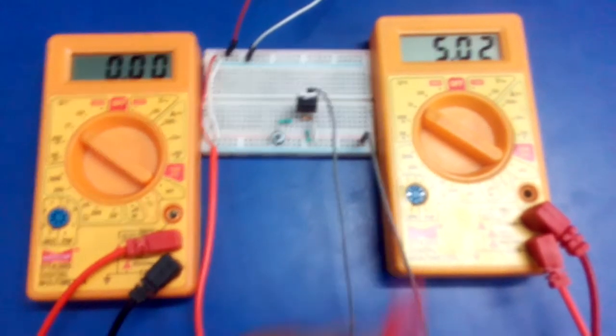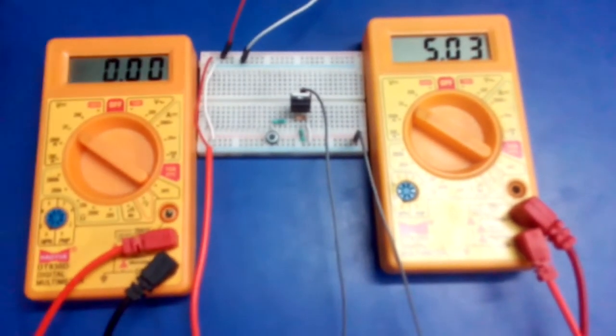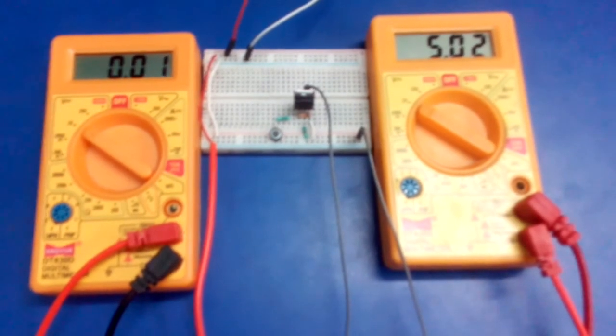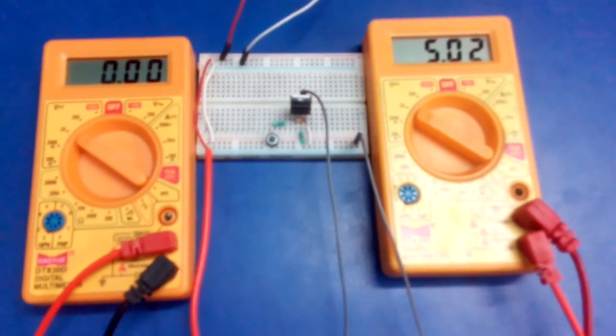We can see at the voltmeter that all the input voltage is dropped across drain to source and we are getting zero volts at the load.